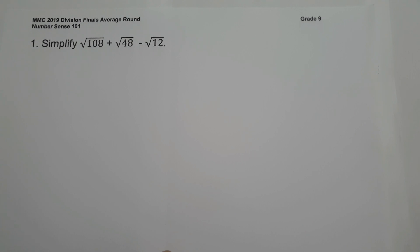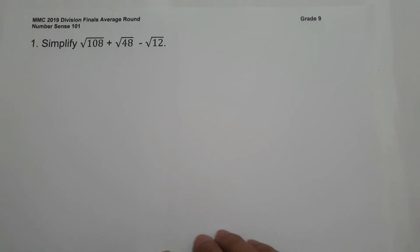On number 1, simplify square root of 108 plus square root of 48 minus square root of 12. The rule in adding and subtracting radicals is we must have the same index and same radicand. In our given, we have the same index but we have different radicands.